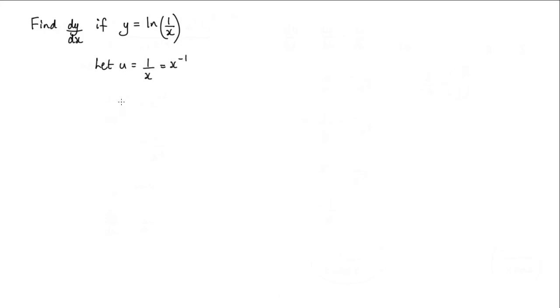Now differentiating that, we get du by dx. Well, that is equal to negative x to the negative 2, which we can actually write as negative 1 over x squared.